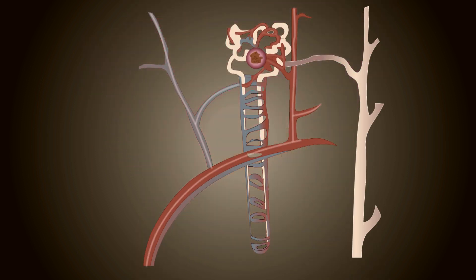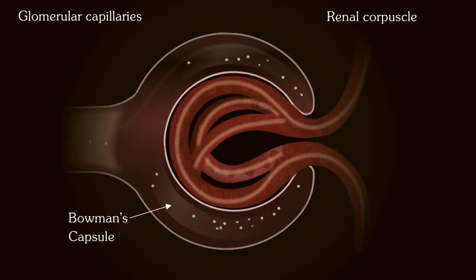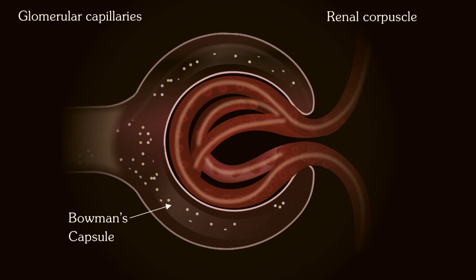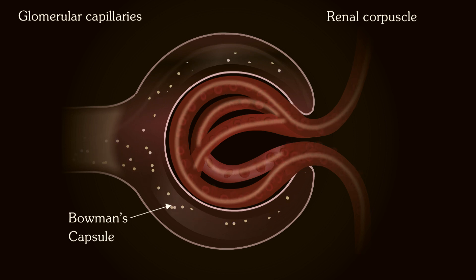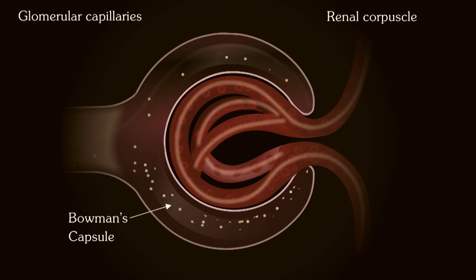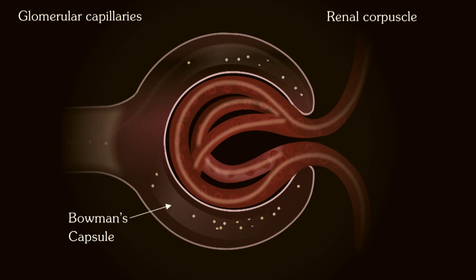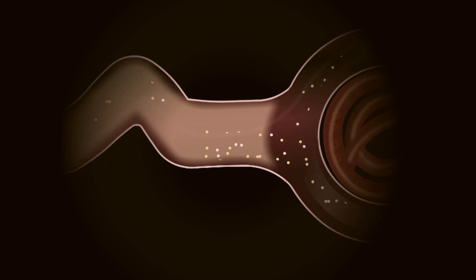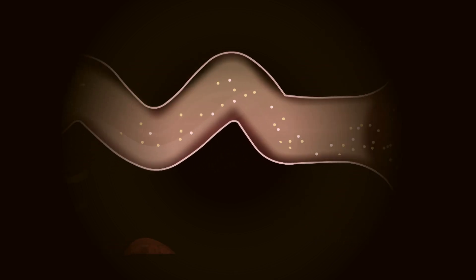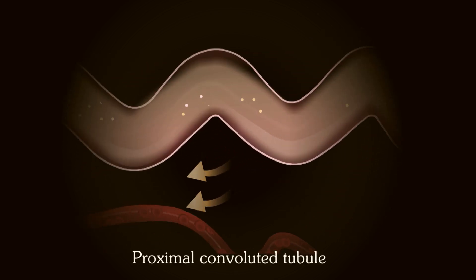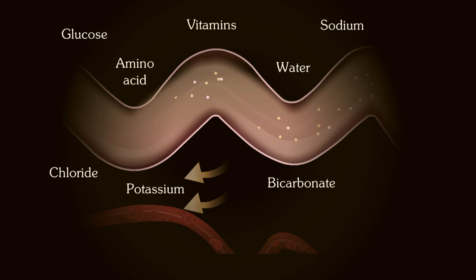The kidney performs the following vital functions in the body: excretion of waste products resulting from protein metabolism; regulation of acid-base balance by the excretion of hydrogen ions, i.e., acidification and bicarbonate ions; and regulation of salt-water balance by hormones secreted both intra- and extra-renally.